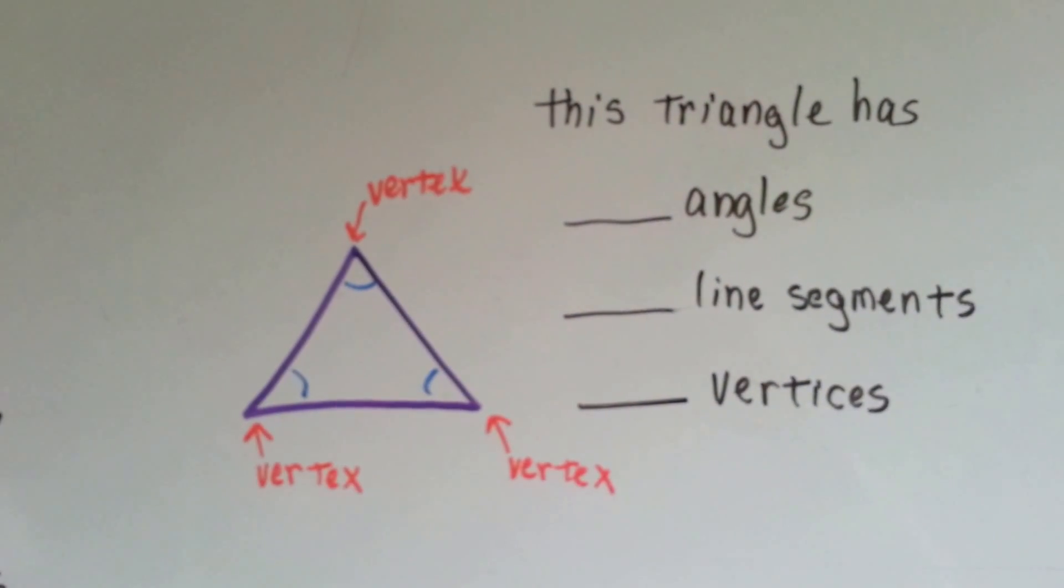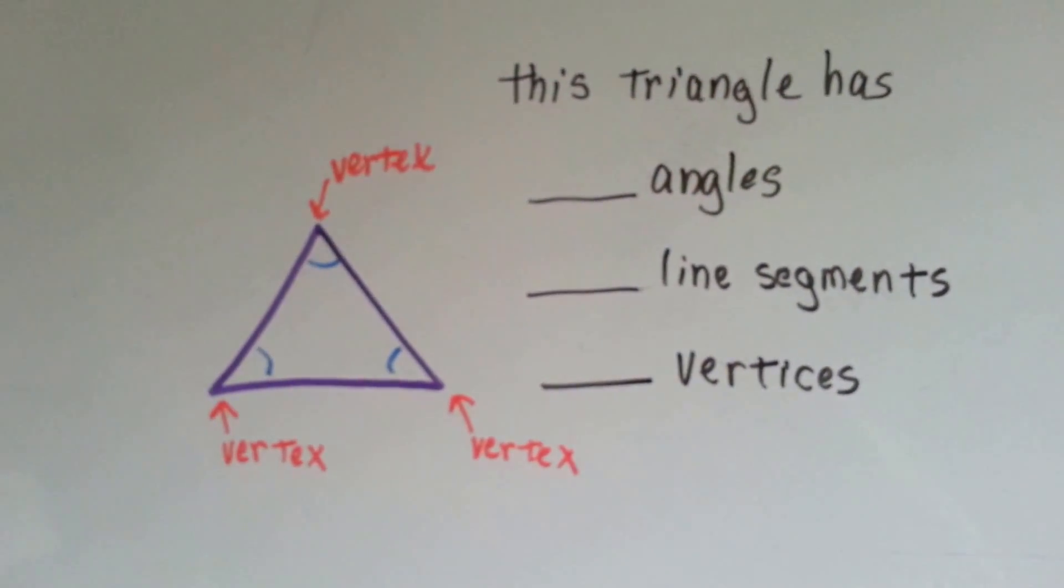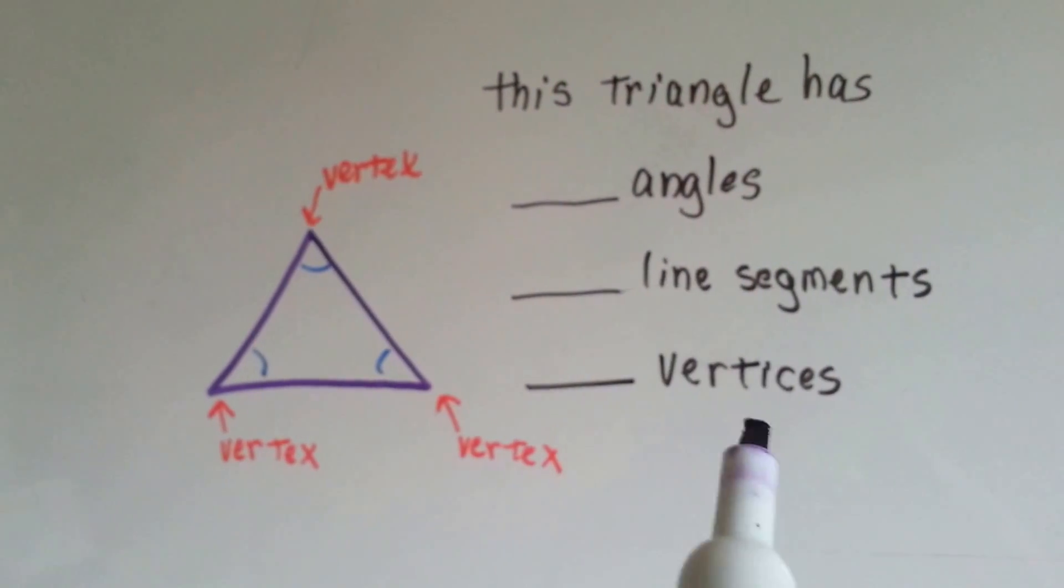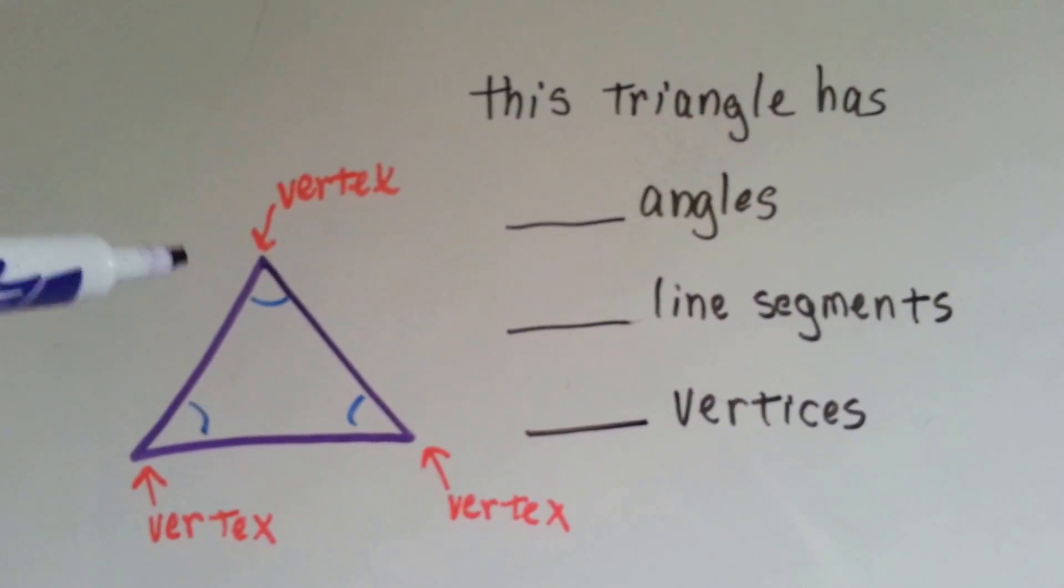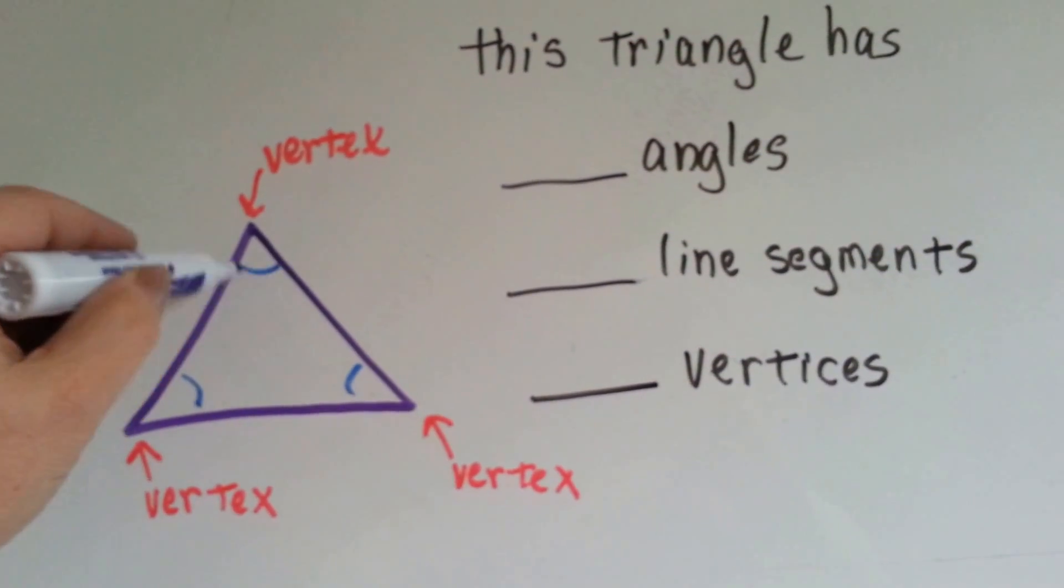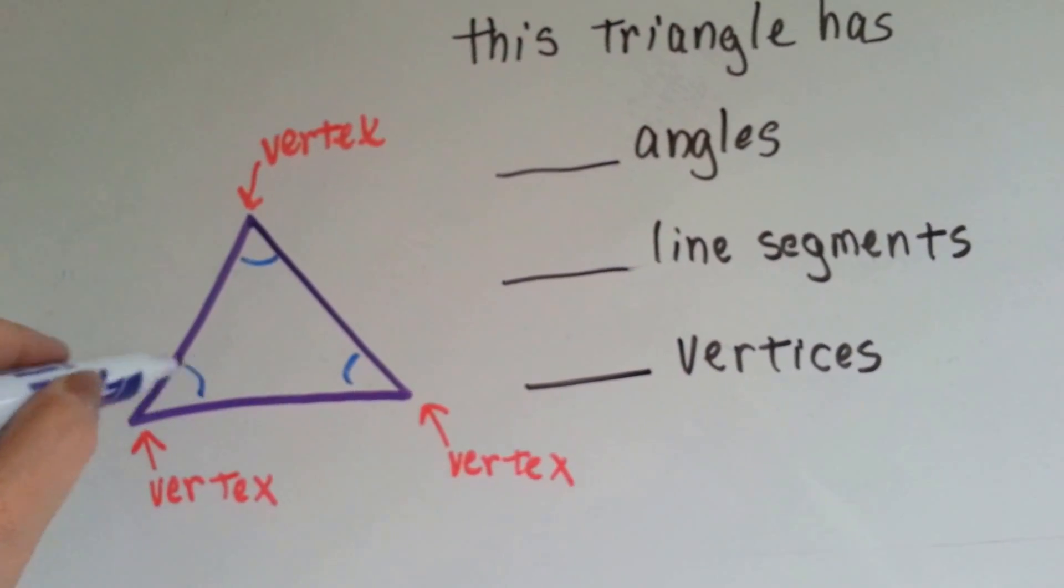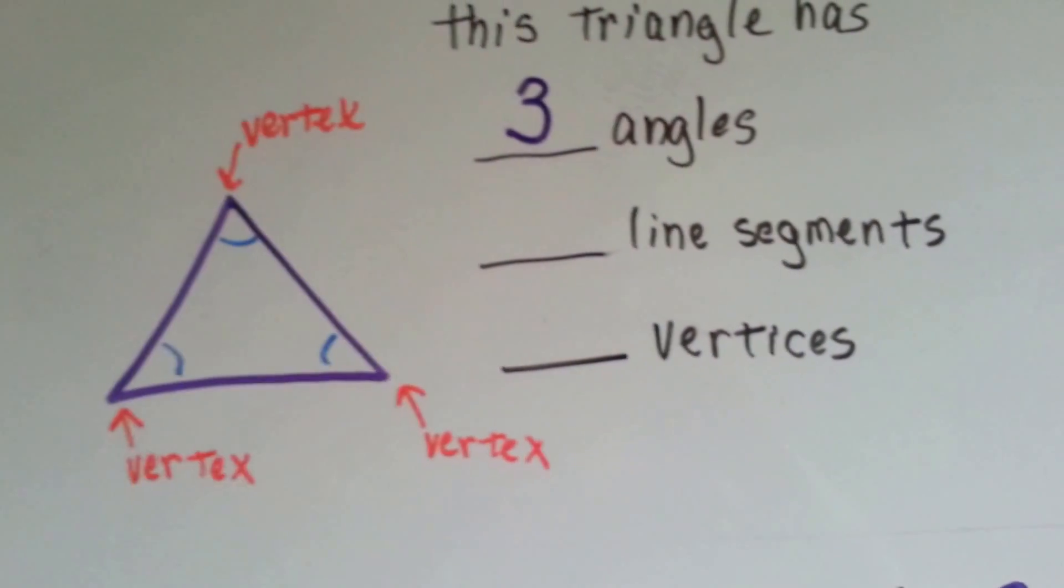Let's see what else we can talk about. Here's a triangle. Let's see how many angles, how many line segments, and how many vertices there are. First, how many angles do you see? Well, there's an angle inside of here, there's an angle inside of here, and there's an angle inside of here. So there's three angles.